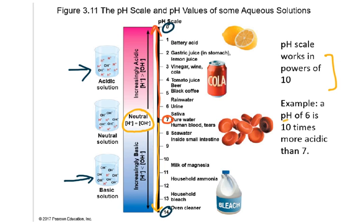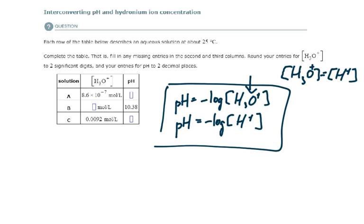When deciphering the pH scale, remember that it works by powers of 10 — it's a log scale. For example, urine and saliva have a pH of around 6, while tears have a pH of 7. Urine is not one time more acidic than tears; every jump on the pH scale is a factor of 10, so urine is 10 times more acidic. A difference of two pH units — say from 5 to 7 — means 100 times more acidic. Comparing tomato juice (pH ~4) to tears (pH 7) would be 1,000 times more acidic.